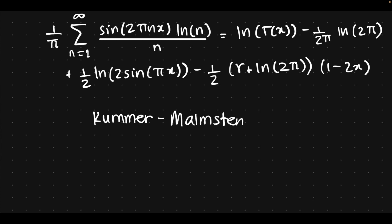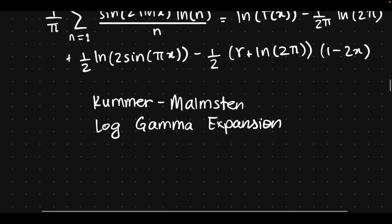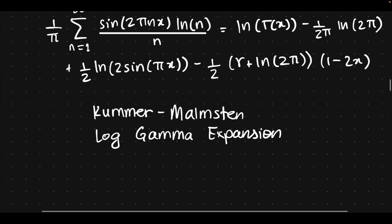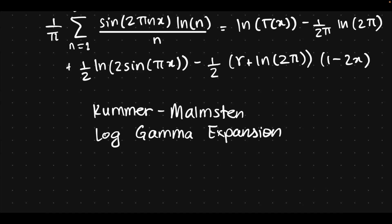And there we go. This I believe Wikipedia calls it the Kumar-Malmsten log-gamma expansion, because I think Kumar did the first thing we derived and he simplified it like we have, and Malmsten got the same expression but for a little more general case of x. But in any case, this will be extremely valuable for the next video, and you will see why. Without this, it would be really hard to solve the video that I'm going to solve in the next video.